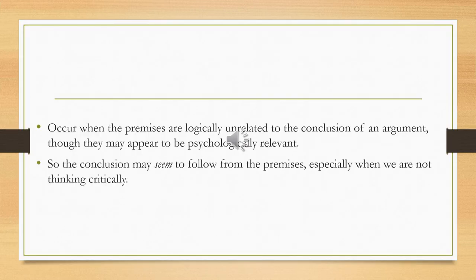Fallacies in general are errors in reasoning, and we're focusing on informal fallacies. These are errors in reasoning that occur in inductive arguments — weak inductive arguments — and we're learning the various patterns these weak inductive arguments can fall into. In the fallacies of relevance, they offer evidence for a conclusion that is not logically related to the conclusion, but it may appear to be psychological motivation to accept the conclusion. You have no rational basis to go along with the argument, but often we do for various reasons.